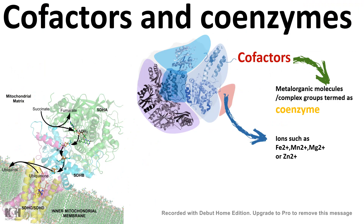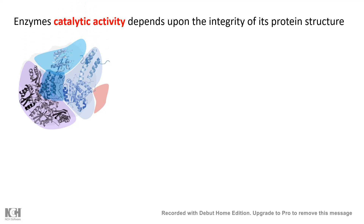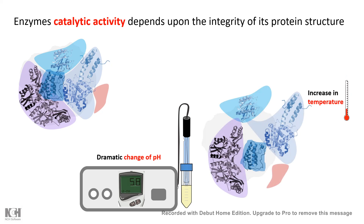In this video we'll talk about cofactors and coenzymes and we'll break down these two terms. We all know that enzymes, which have catalytic activity, are totally dependent upon their structural integrity. Proteins have a complex 3D structure, and a dramatic change in pH or temperature might lead to denaturation of the tertiary structure, resulting in disruption or alteration of the activity.